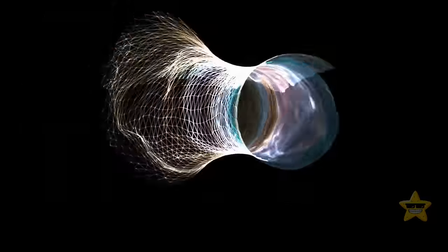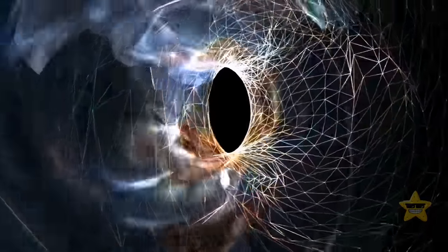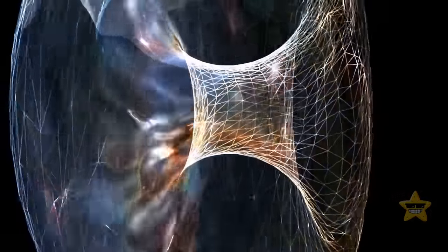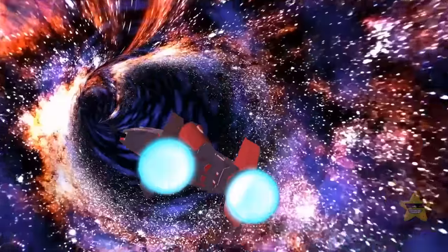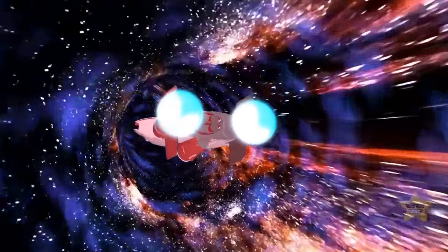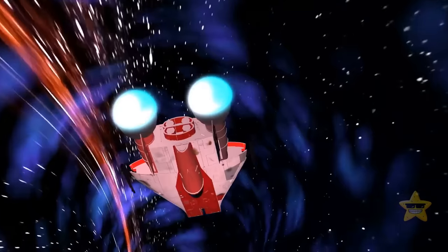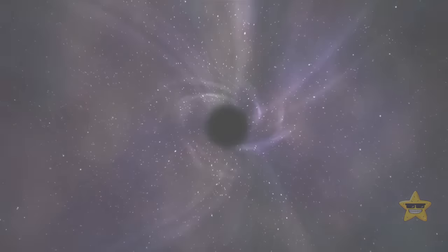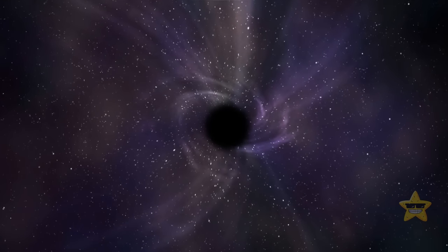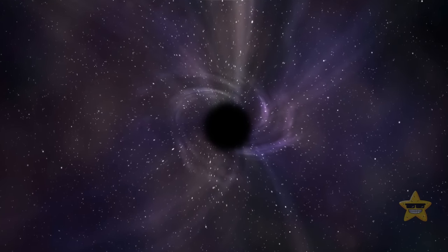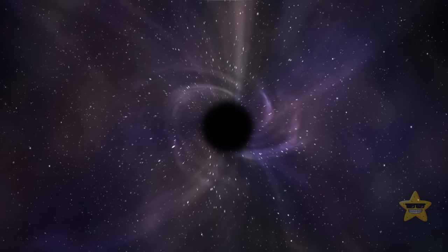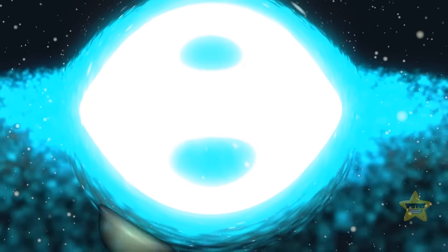This idea that black holes could be wormholes leading to other galaxies or universes has been around for some time. It gained some fresh ground in the 1980s when a discussion started about whether an object could physically travel through such a tunnel. But if black holes lead to other galaxies or other universes, there must be something opposite to them on the other side. That's where the concept of white holes comes into play.